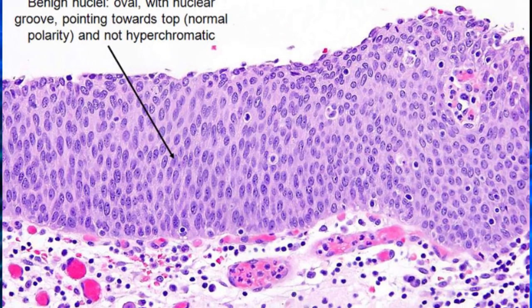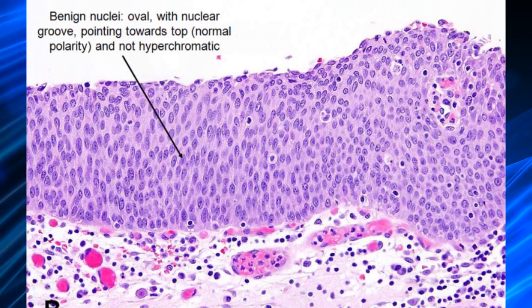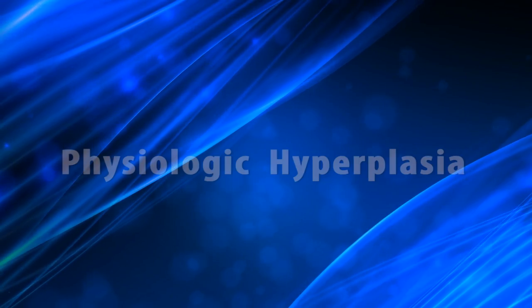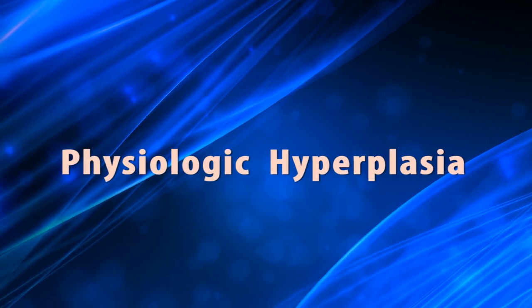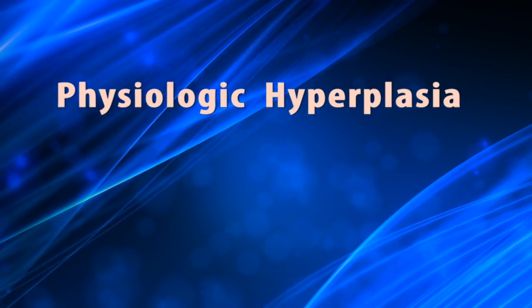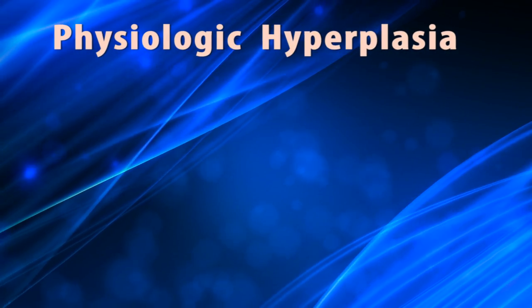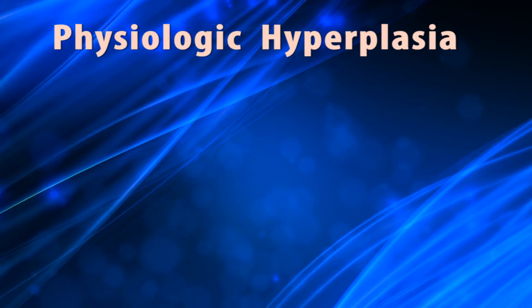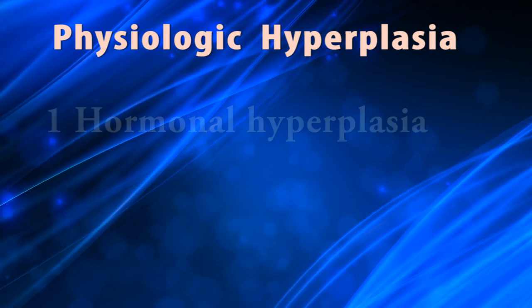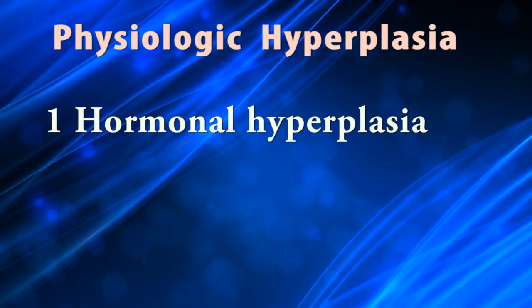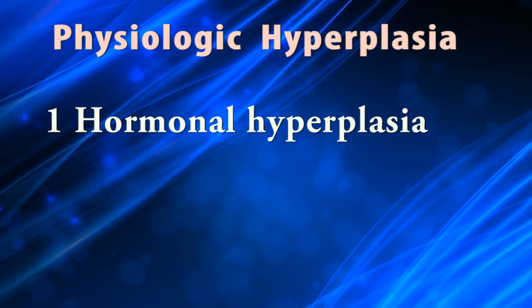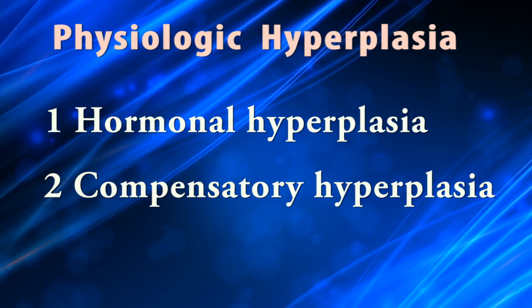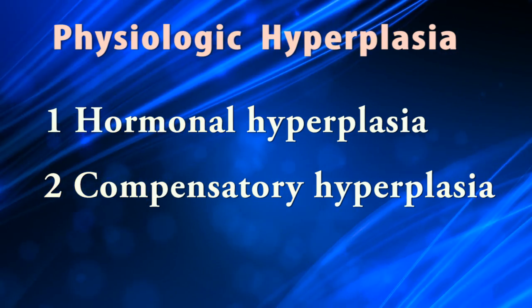Hyperplasia can be physiological or pathological. In both situations, cellular proliferation is stimulated by growth factors produced by a variety of cell types. There are two types of physiologic hyperplasia: one is hormonal hyperplasia, and two is compensatory hyperplasia.